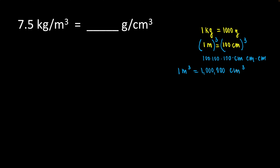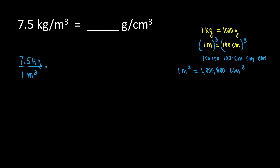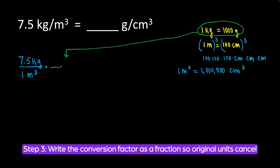We are ready to go. Write what you have as a fraction: 7.5 kilograms per one cubic meter. And prepare to multiply. We are going to take this conversion factor — one kilogram is equal to 1,000 grams — and set it up right here.